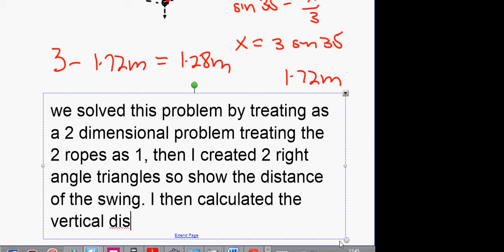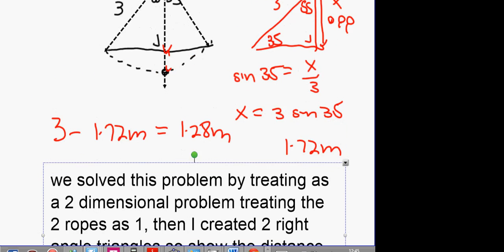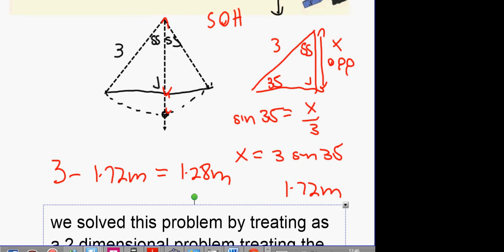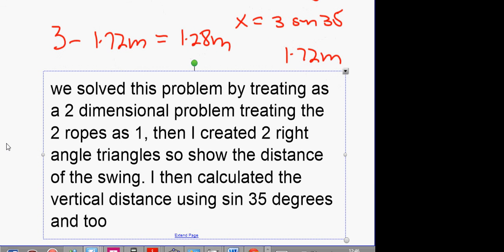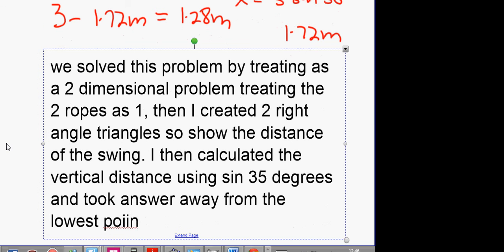I then calculated the vertical distance down. Do you know what I mean by the vertical distance down, guys? The vertical distance down was our 1.72. I calculated the 1.72 by using sine 35 degrees. And took the answer away from the lowest point of 3 meters below the swing. That's it there. It was a complete variable breakdown of what you did.